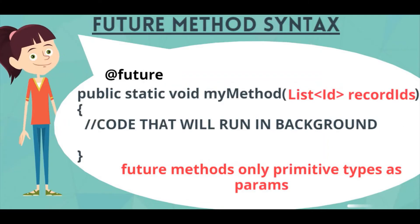One other important point: future methods will take only primitive types as parameters. Primitives are things like integers, booleans, and list of IDs. It cannot take non-primitives such as SObjects or any class types. The reason is simple: let's say you send an Account as a parameter with name 'ABC Corporation'. As it runs asynchronously it might take a little time to execute, and during that time the account name might be changed to 'ABC Limited'. The future method cannot get that latest value — it will still run on the old values, which leads to inconsistent results. That is why it only allows primitive types.